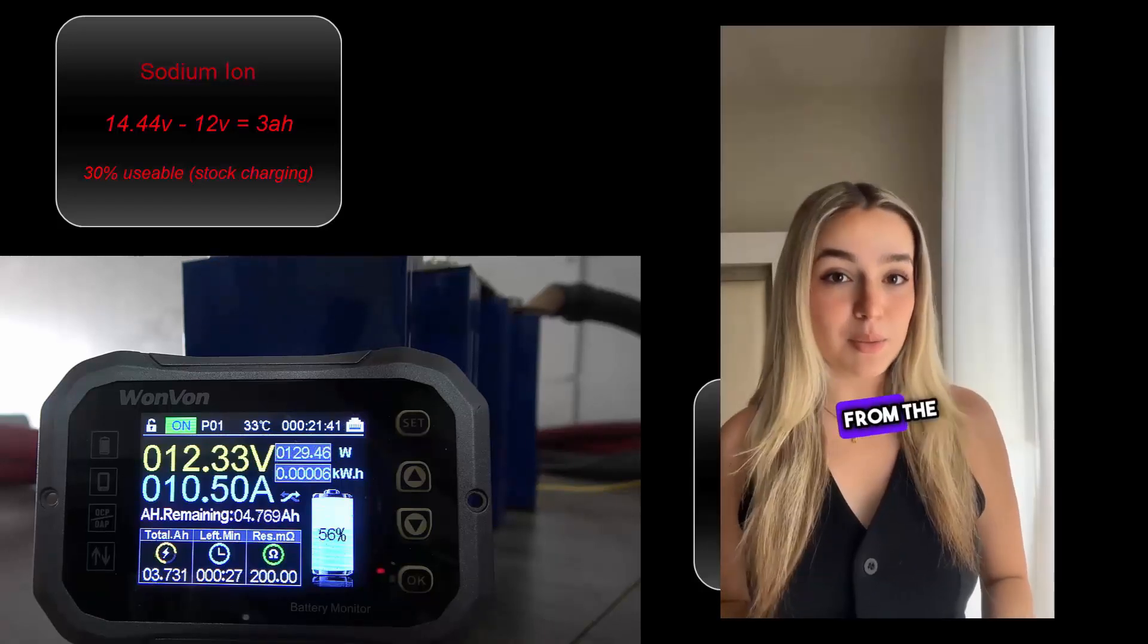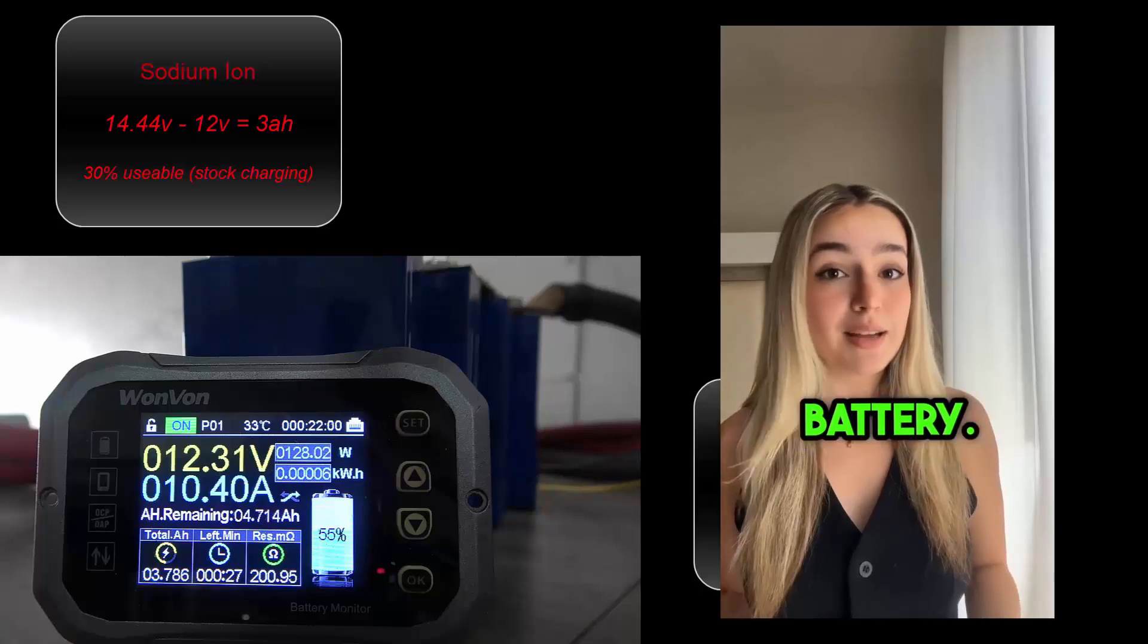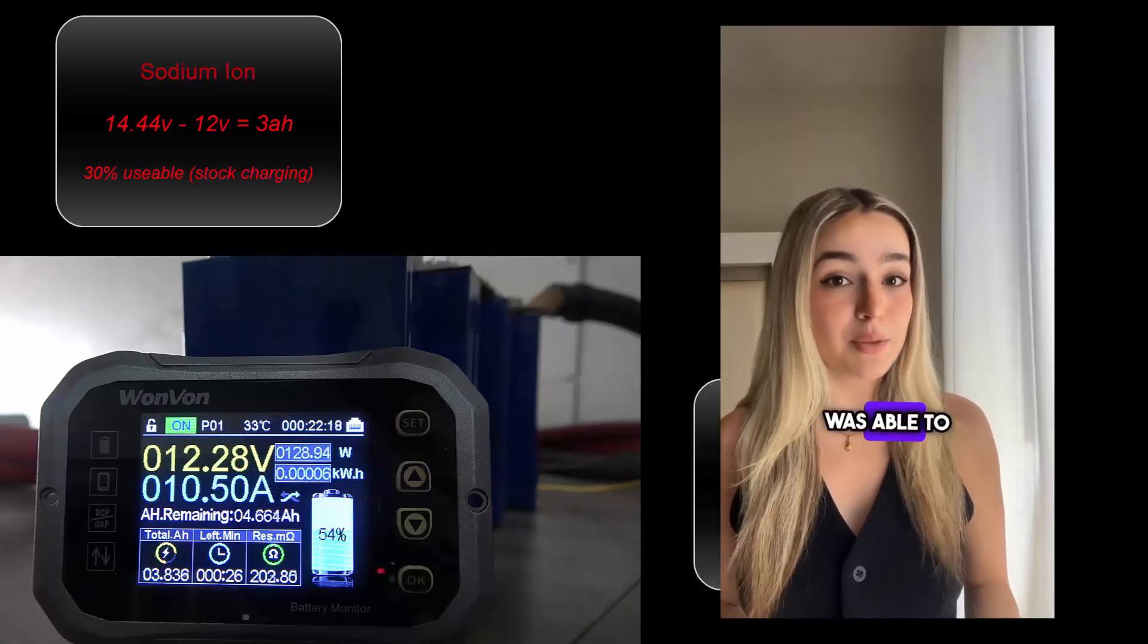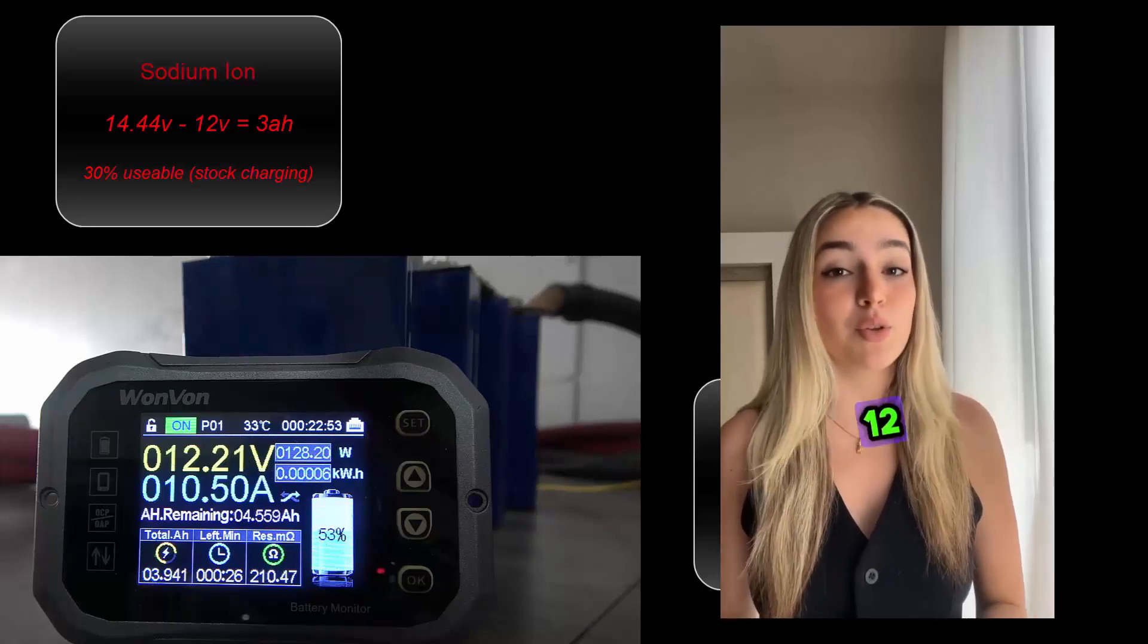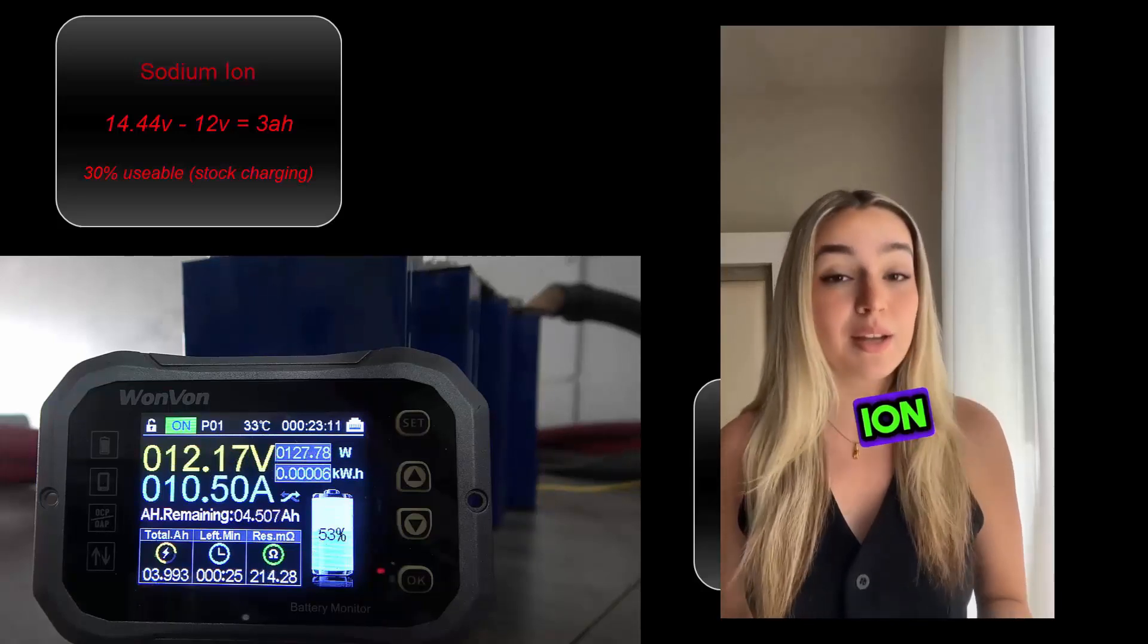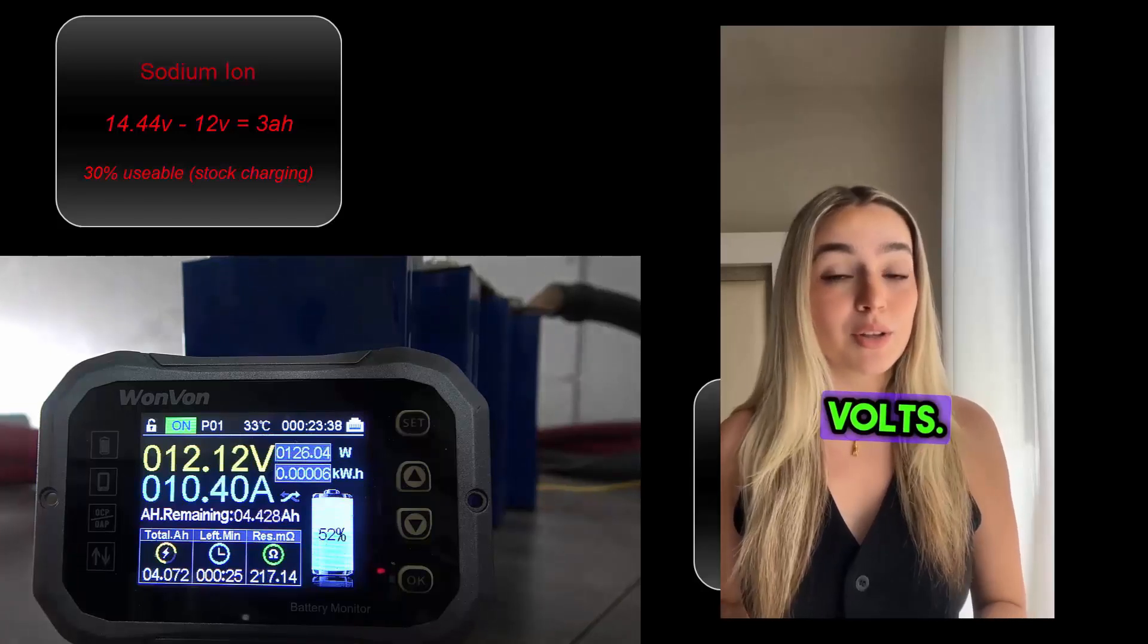4.26 amp hours from the smaller lithium iron phosphate battery. This means the lithium cell was able to provide almost 1.4 times the amount of amperage before dropping below 12 volts when compared to the sodium ion setup, and an impressive 51% over 12 volts.